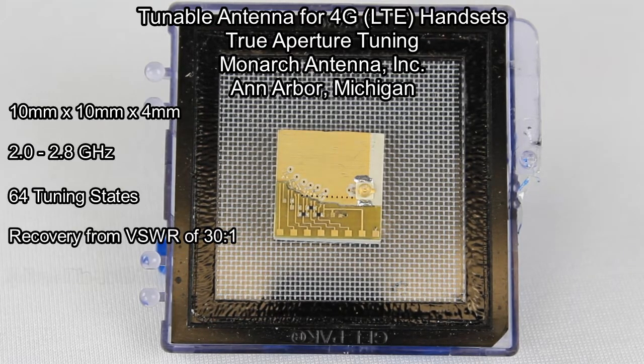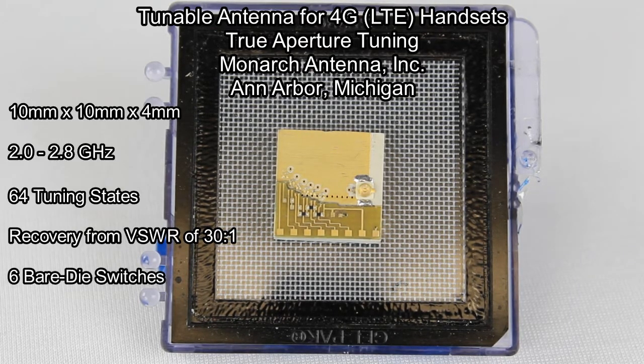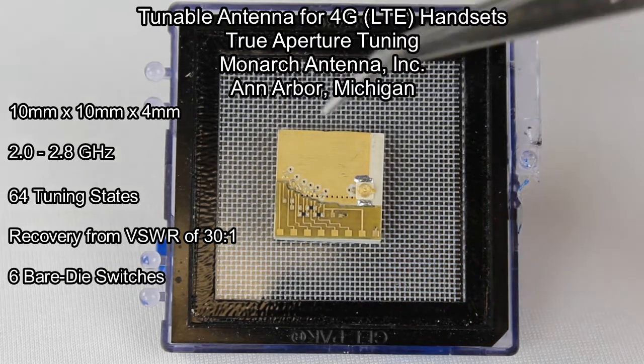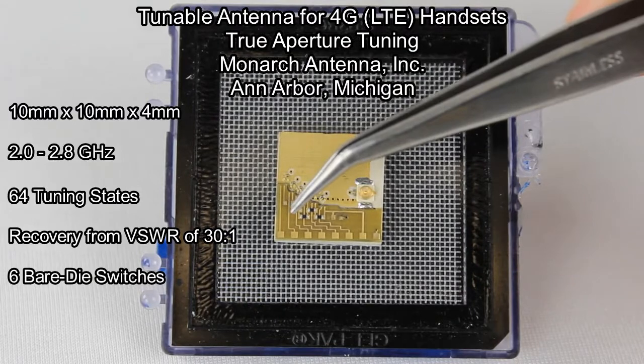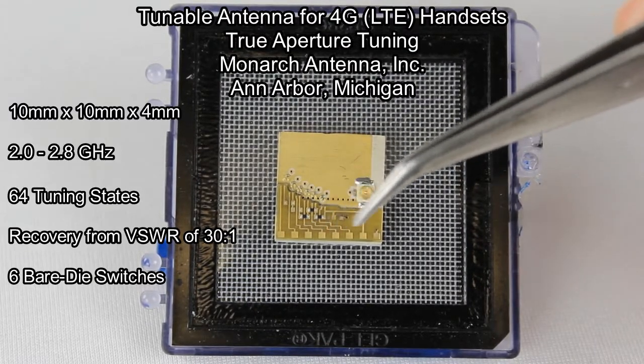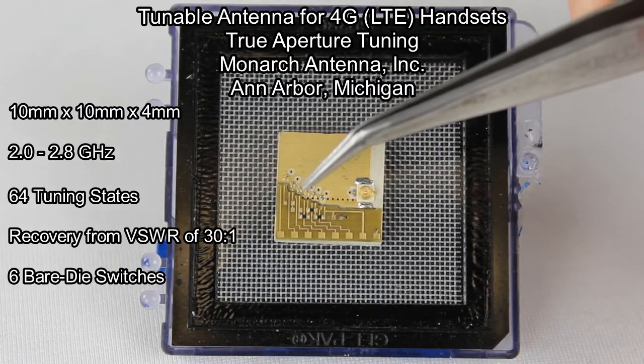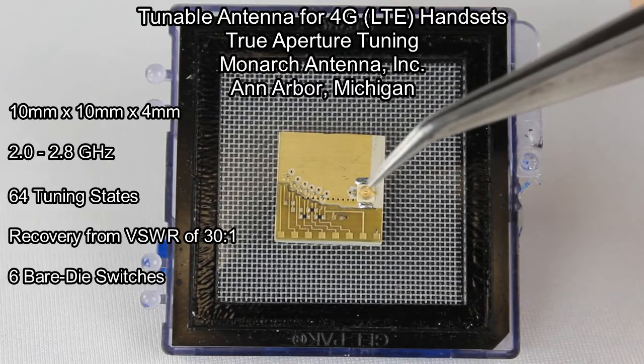It utilizes six bare die switches wire-bonded to the board that connect and disconnect shorting pins to ground. On the bottom are the DC lines for the switches, and in the middle are the switches and shorting pins. This is the RF connector on the right.